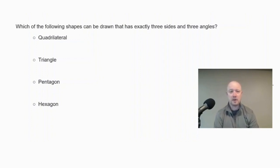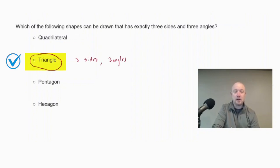We want to know the definition of our polygons and what the prefixes mean. So a triangle is a polygon with three sides and three angles. So the correct answer is triangle. And by using our prefixes, quad is four sides and four angles, penta is five sides and five angles, hexagon is six sides and six angles. So when we're looking for three sides and three angles, we are dealing with a triangle.